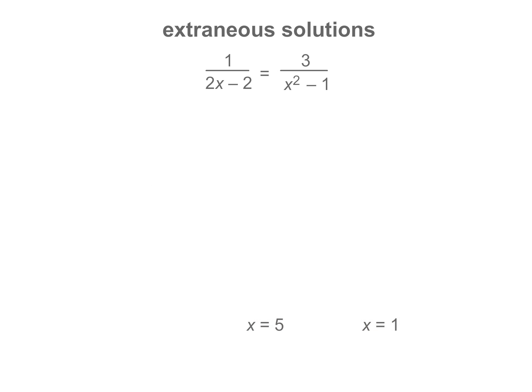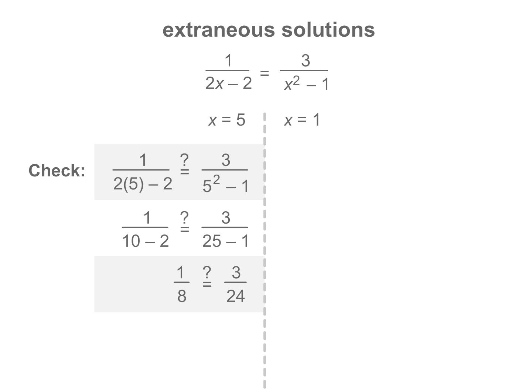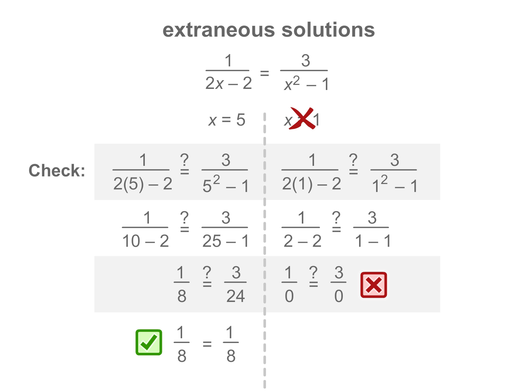A solution must be discarded if it causes division by zero in the original equation. After checking, the solution x equals one is discarded since the original equation is undefined for that value. The final solution is x equals five.